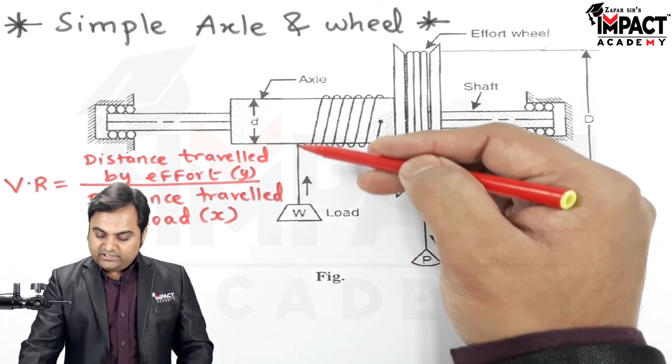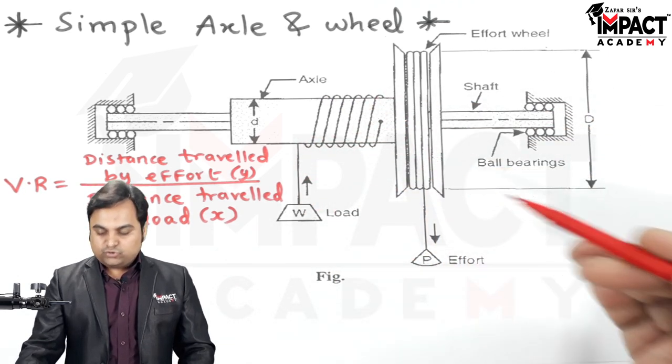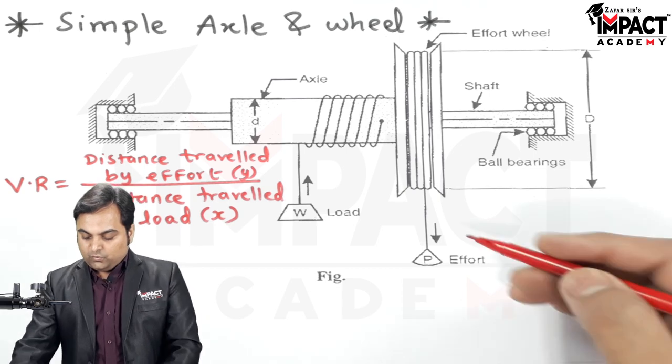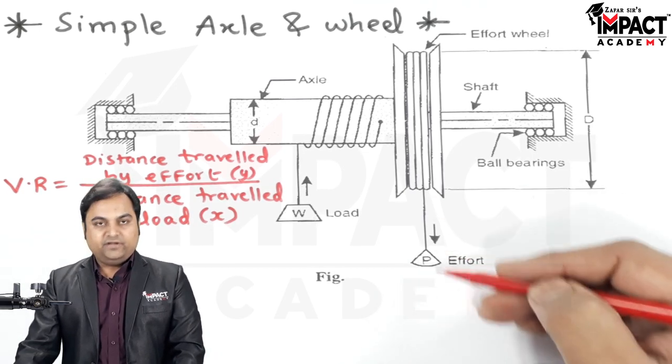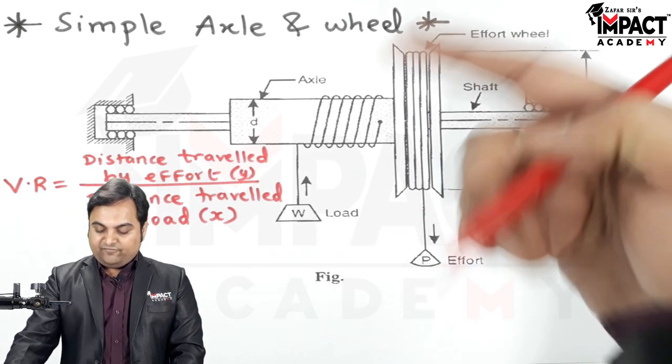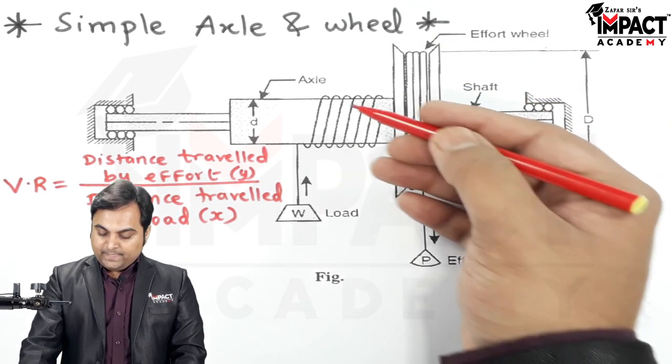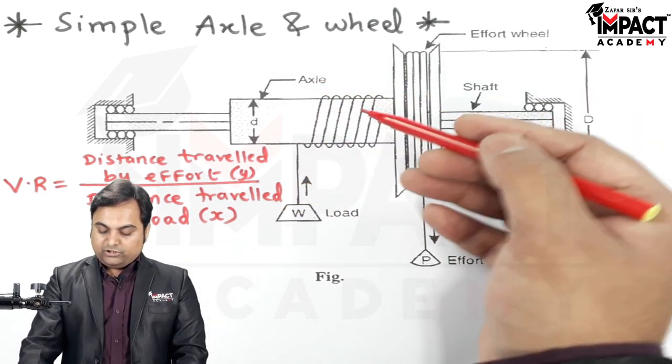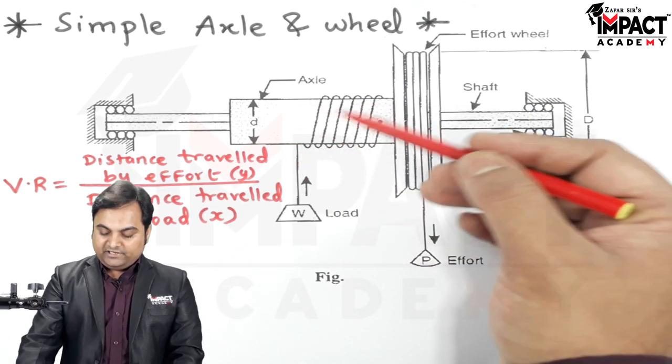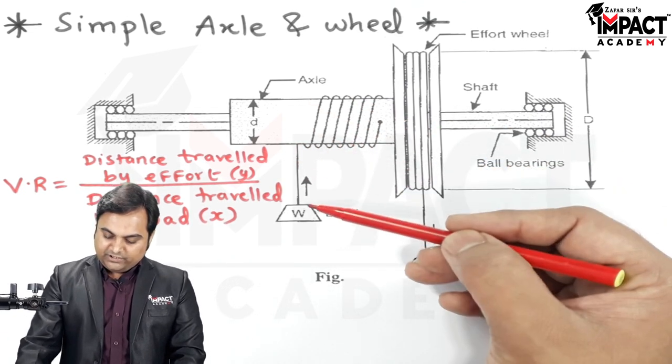So what happens here is when we are applying the effort at the effort wheel by pulling the rope, effort wheel starts to rotate. Once the effort wheel starts rotating, then the load drum or the load axle will rotate and the rope will get wound. And in this way the weight would be lifted.